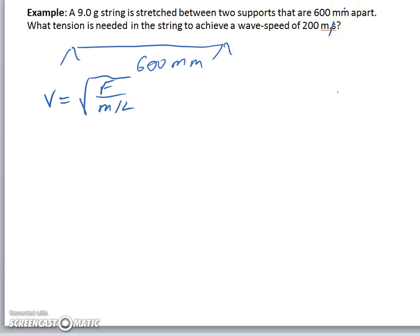Velocity 200m per second is an SI unit, 600mm is not an SI unit, and 9g is not an SI unit. So we need to do our unit conversions.